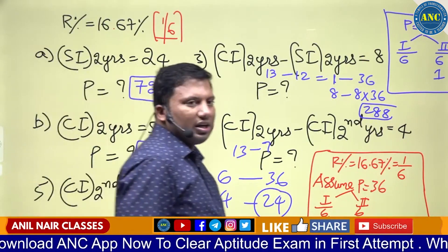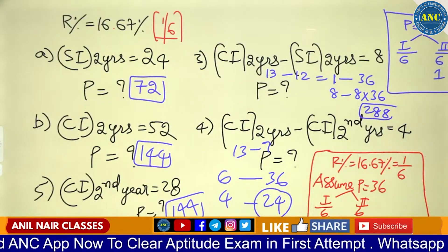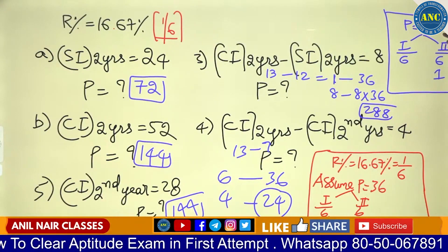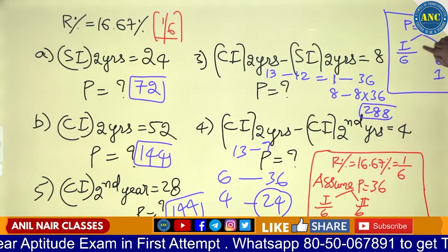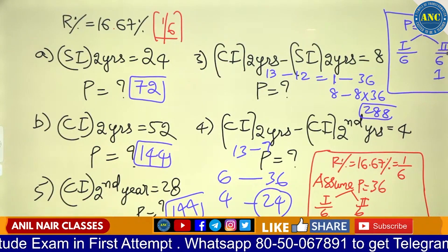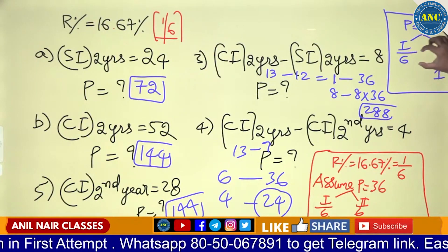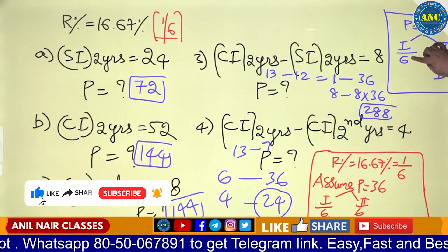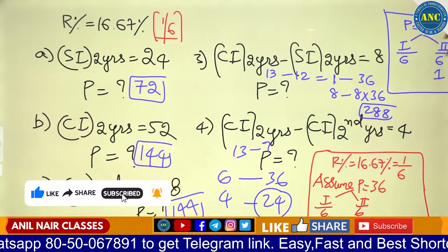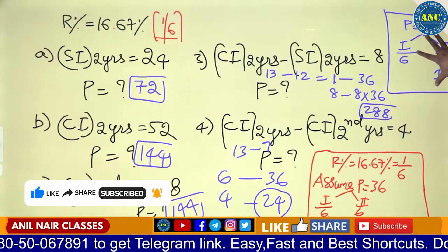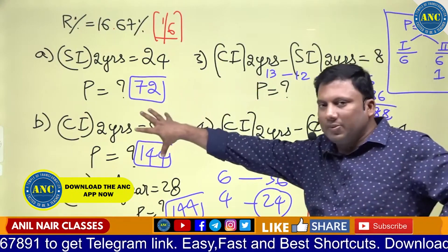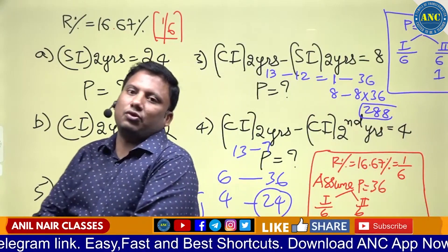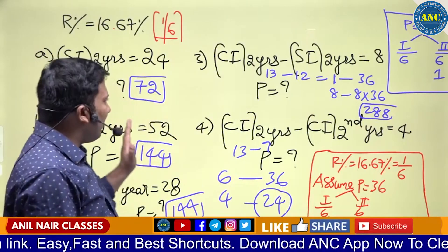Once you know how to draw the table, it becomes very easy. R = 1 by 6, so 6 squared is 36. One-sixth of 36 is 6, one-sixth of 6 is 1. SI for first year: 6, SI for second year: 6. CI for second year is SI plus interest on interest: 6 plus 1 equals 7. Total CI for 2 years is 13. Thirteen becoming 52 means 4 times, so 36 times 4 equals 144.